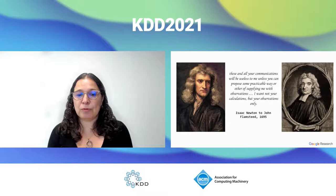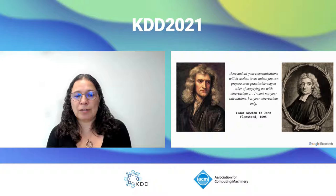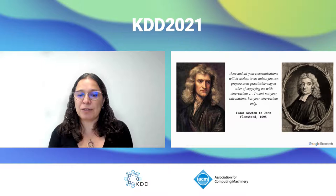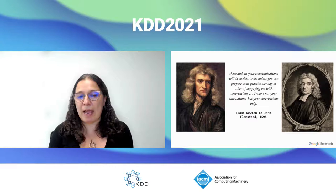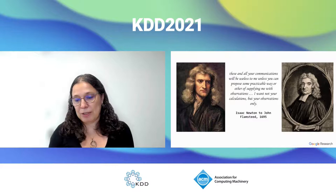In fact, Newton wrote to him in 1695: 'These and all your communications will be useless to me unless you can propose some practical way of supplying me with observations. I want not your calculations, but your observations only.' Exactly the same types of things we are thinking about now when publishing papers and asking for data supporting the findings to be published.